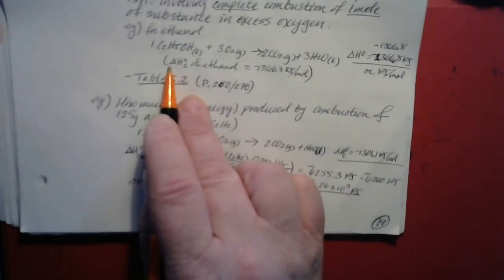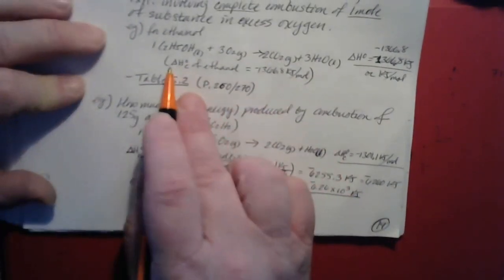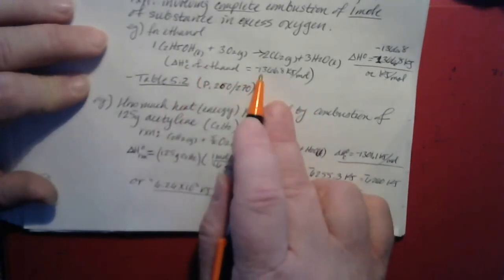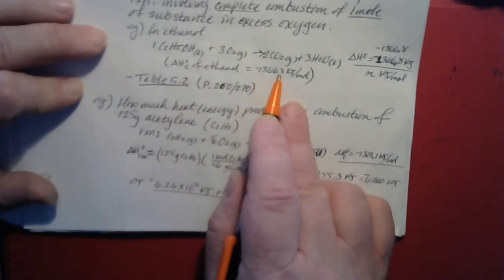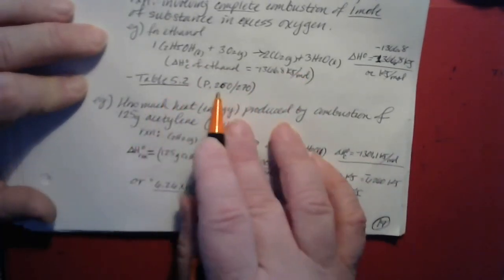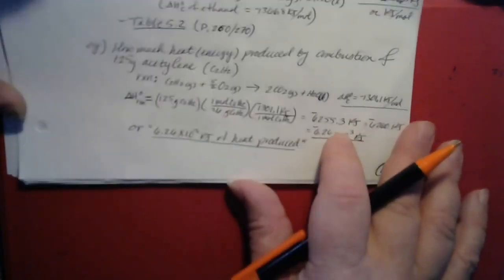The symbol for standard enthalpy of combustion is delta H° with a little C as a subscript. Enthalpies are often referred to as heat, which is where the symbol H comes from. For ethanol, the standard enthalpy of combustion is negative 1,366.8 kilojoules per mole. There's a table on page 260 for the hard copy, or page 270 for the PDF, that shows enthalpies of combustion for various substances.